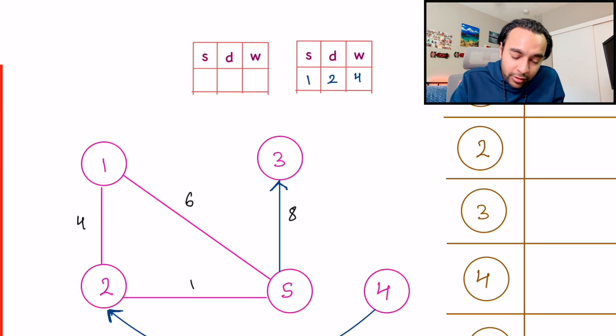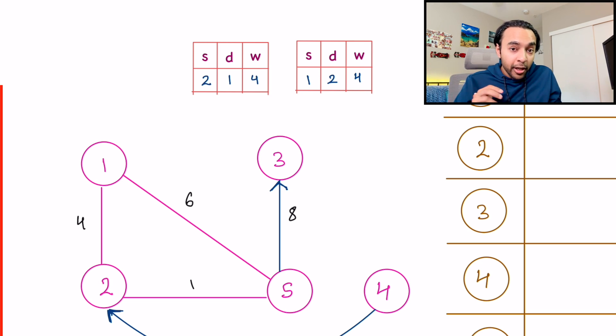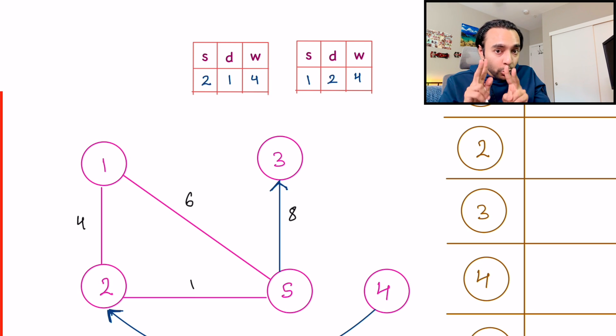And in this object, I am going to write down my source is two, my destination is one, and the weight is four. So now I defined two edge objects. So this is how you are defining an undirected edge, you are going in both directions.